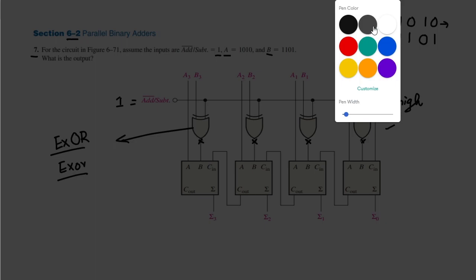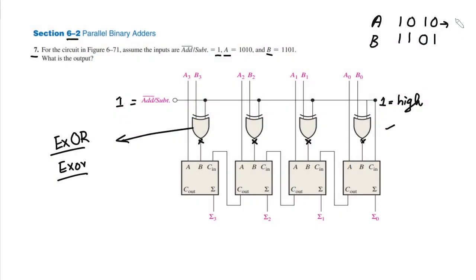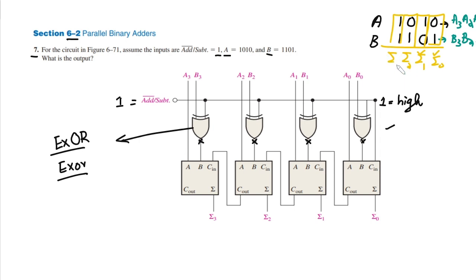Let me write these with a different color. This is a3, a2, a1, and a0, and these are b3, b2, b1, and b0. These two will be added together, these two, these two, and these two, and at the end we will get their outputs — sigma0, sigma1, sigma2, and sigma3. Now let me write the combinations here with red color.